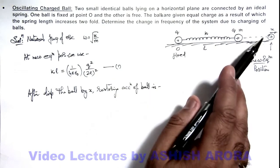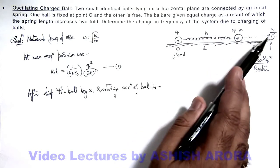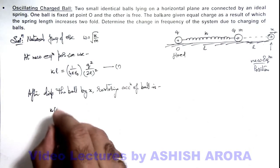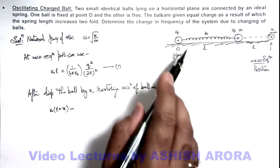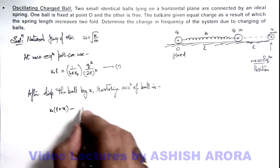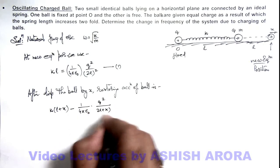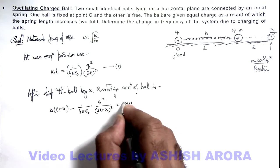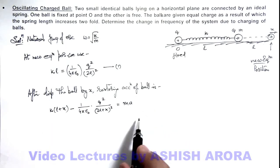Because after further displacing by x, the spring elongation changes to l plus x. So inward force on the ball will be k times (l + x) minus the Coulombian force it is experiencing is 1 by 4π epsilon_0 q squared by (2l + x) whole squared. And this should be equal to m times a, where m is the mass of ball and a is its acceleration. So this is the equation of motion.